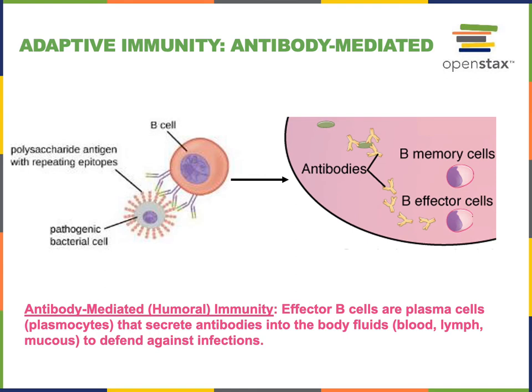The antibodies can bind to antigens on the surface of a pathogen in order to help direct the immune defenses to protect against that specific pathogen. While the effector cells of the antibody-mediated immunity are a type of B lymphocyte, some T lymphocytes are also involved in antibody-mediated immunity. These are known as T helper cells that can help stimulate the activation of B lymphocytes.